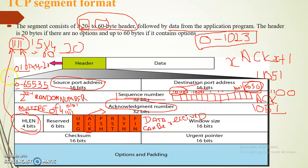Any value below 5 is an illegal value, meaning the header is corrupted and will not be allowed. Next is the reserved bit. Reserved bits are for future use, so we are not going to discuss them.